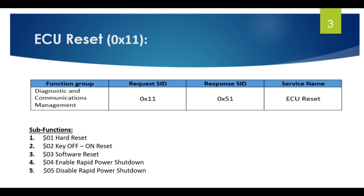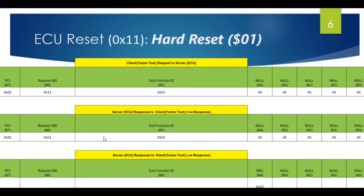There are mainly five sub-functions, but the important ones are 01, 02, and 03 — hard reset, key on/off reset, and software reset. For hard reset, the ECU Reset service ID is 0x11 and the sub-function is 0x01. When you send a request from your diagnostic tool to the ECU, the client (diagnostic tool) is requesting to the server (ECU).